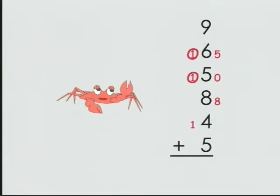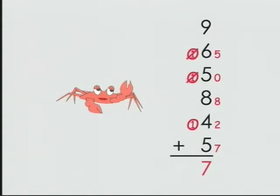Save the 10 for later, write down 2. Plus 5 is 7: record the sum digit 7. Then count the saved tens: 1, 2, 3 — that's 10. The final sum is 37.